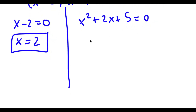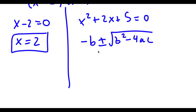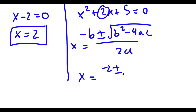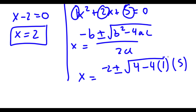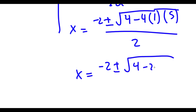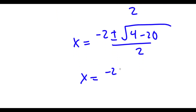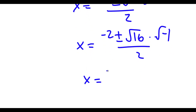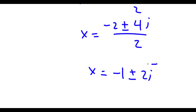For x squared plus 2x plus 5 equals 0, I can use the quadratic formula, which is negative b plus or minus the square root of b squared minus 4ac all over 2a. So in this case b is equal to 2, so I have negative 2 plus or minus the square root of 2 squared, which is 4, minus 4 times a, which is 1, times c, which is 5, all over 2a, so 2. This is the same thing as negative 2 plus or minus the square root of 4 minus 20 over 2, which equals negative 2 plus or minus the square root of negative 16 over 2. The square root of negative 16 is the square root of 16 times the square root of negative 1, and the square root of negative 1 is equal to i. So negative 2 plus or minus 4i over 2, which is equal to negative 1 plus or minus 2i. So two more solutions.